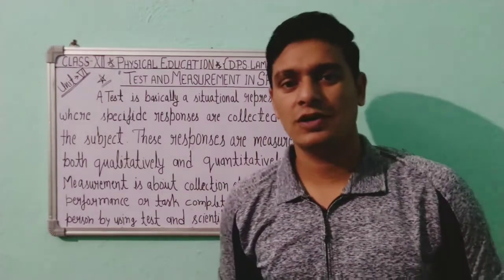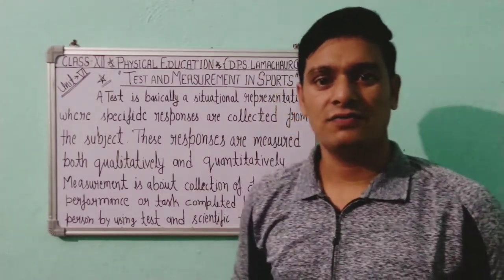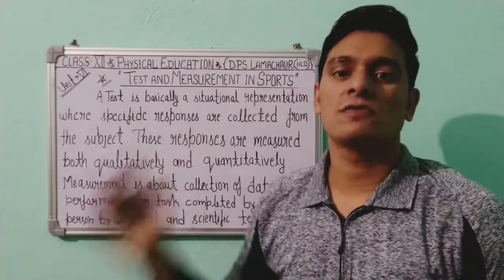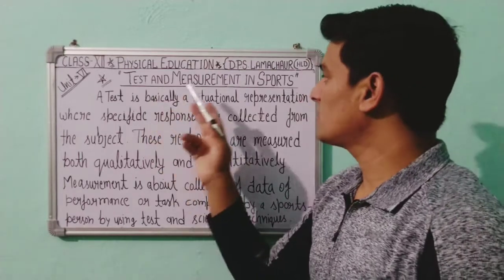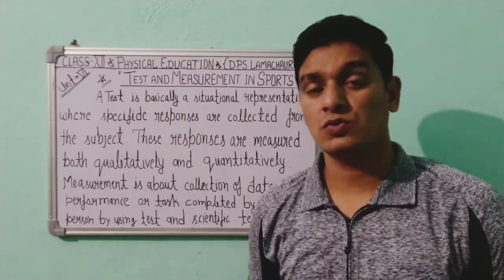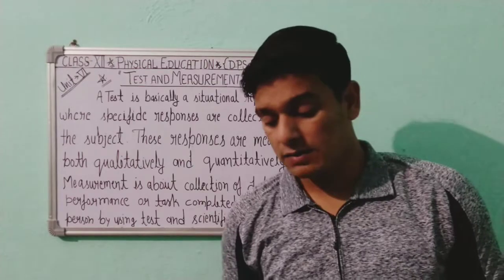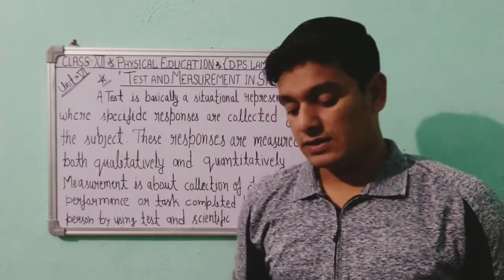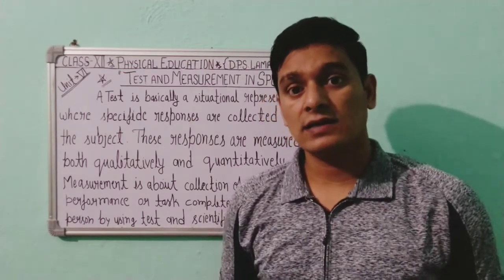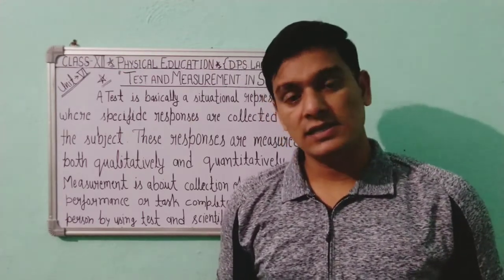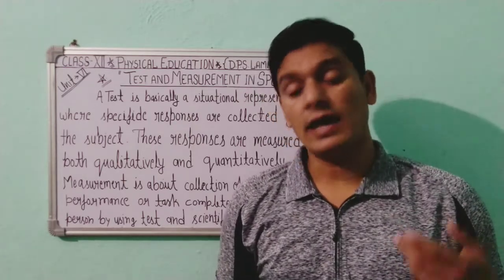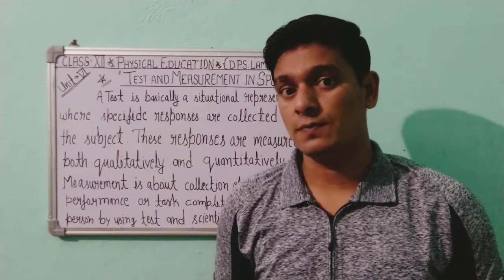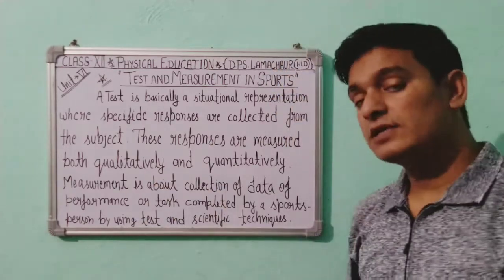Hello everyone, hope you all are healthy and fit. Today we are going to discuss Unit 6 of Physical Education for Class 12, which is Test and Measurement in Sports. Test and measurement in physical education are devices necessary to collect details regarding the requirements, abilities, and attitude of a sports person.